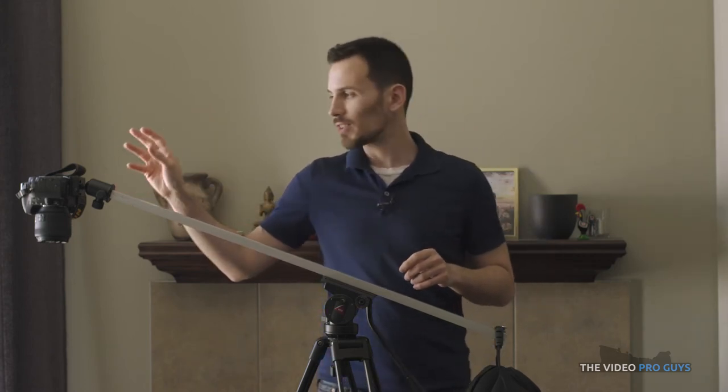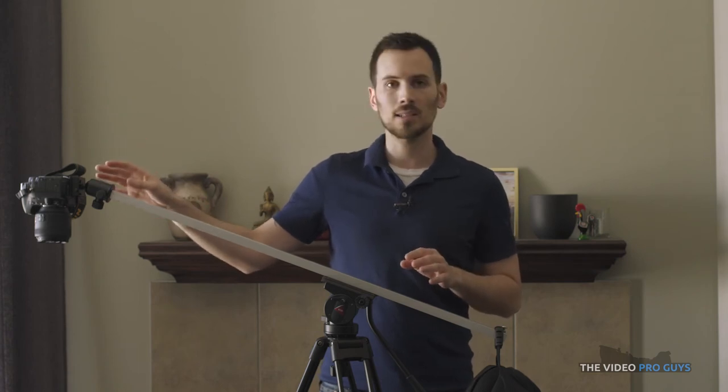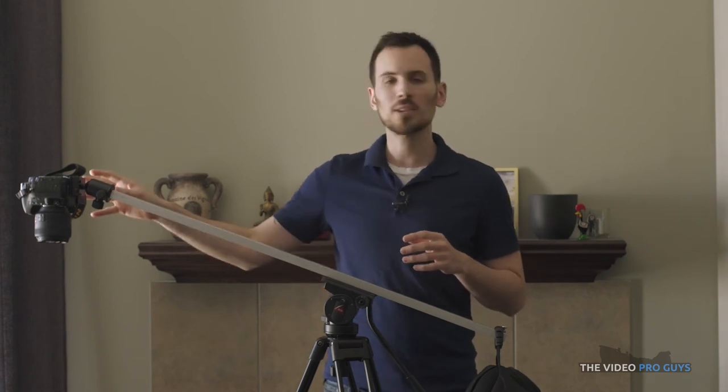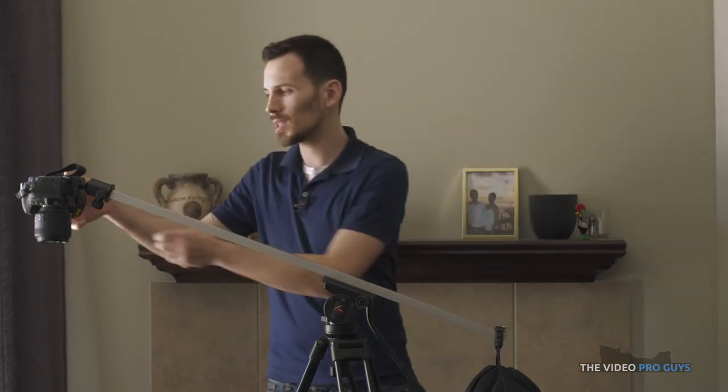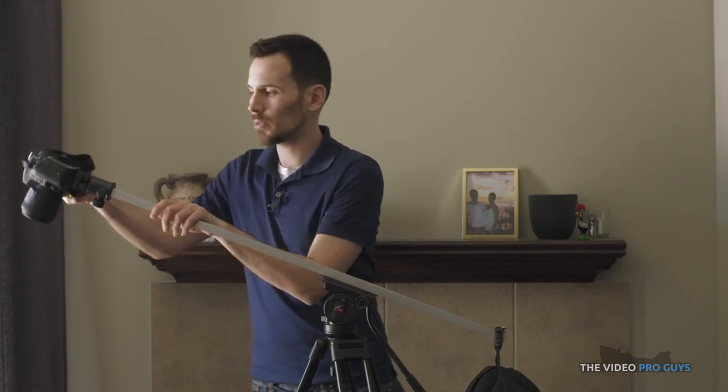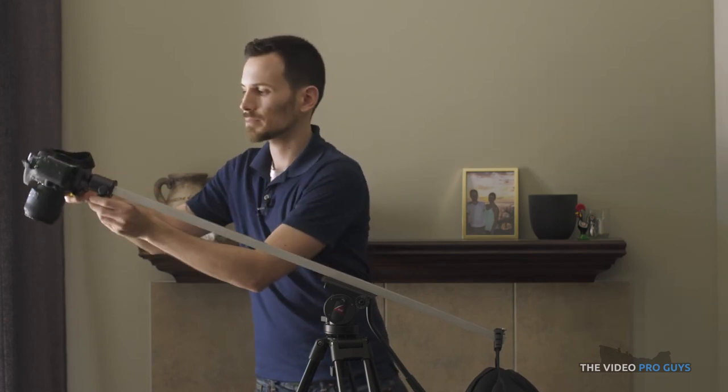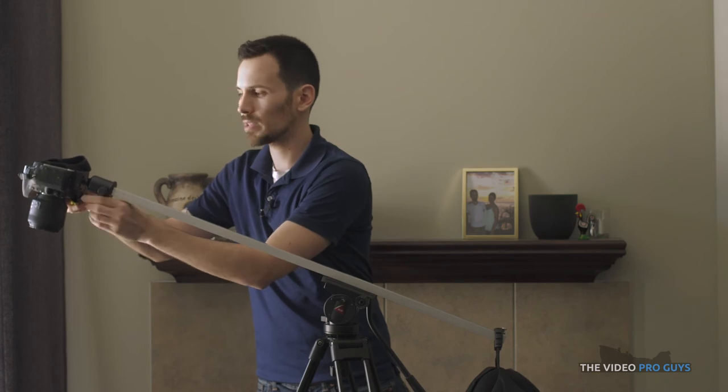And I have here mounted a normal photo ball head with my Nikon D610 which is about 3 pounds with the lens. And it's not going anywhere, it's really sturdy. The ball head gives me plenty of range of motion so I can adjust it the way I want.